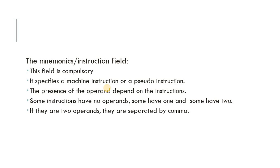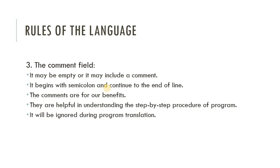If there are two operands, they are separated by a comma. For example, if you want to perform addition of three numbers, after the instruction each operand is separated by a comma. The next field is the comment field — it may be empty or include a comment. It begins with a semicolon and continues to the end of the line. Comments are for our benefit, helping us understand the step-by-step procedures of the program, and are ignored during program translation.